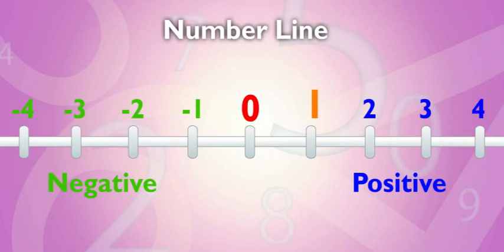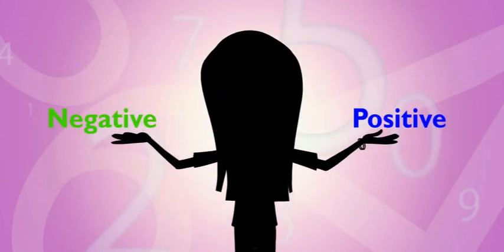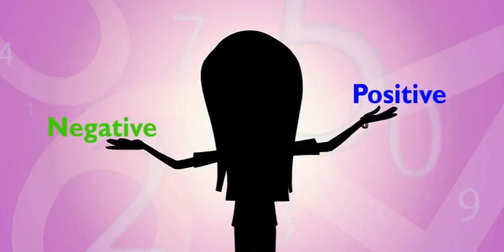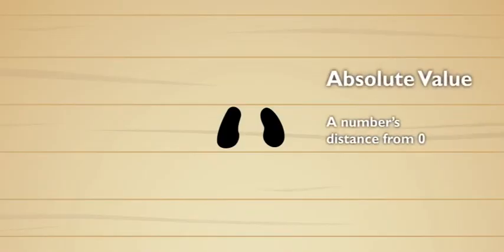Every positive number has an opposite negative number. Opposite numbers have the same absolute value. But that makes no sense. How can a negative number have the same value as a positive number? Well, absolute value is just a number's distance from zero, whether it's negative or positive.